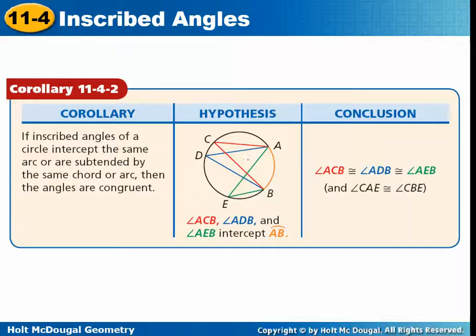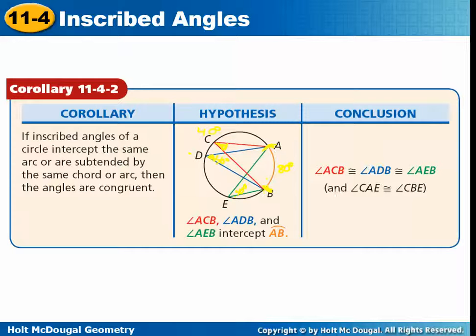This makes sense: angle ACB goes with arc AB. If the measure of arc AB is 80 degrees, then the angle must be 40 degrees. Angle ADB also holds onto the same intercepted arc, so it also must be 40 degrees. And angle AEB is holding onto the same arc — it must also be 40 degrees. So all three inscribed angles have the same intercepted arc; therefore, they're all congruent to each other.